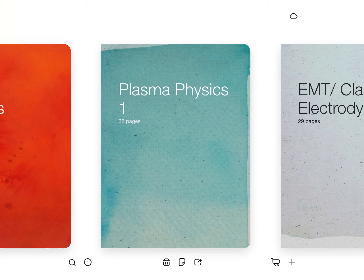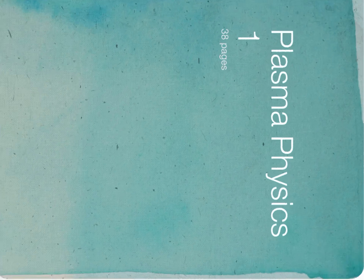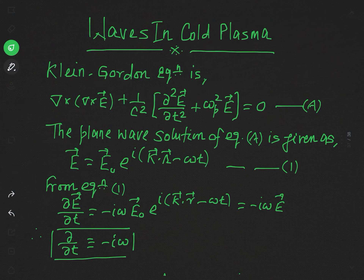We are discussing wave propagation in cold plasma. In the first lecture we derived the basic equation for this, which is called the Klein-Gordon equation. In this lecture we will discuss wave propagation. The Klein-Gordon equation derived in the first lecture is: del cross del cross E plus (1/c²)(∂²E/∂t²) + ωp² E = 0, where ωp is the plasma frequency or plasma oscillation frequency, and c is the speed of electromagnetic waves in free space.